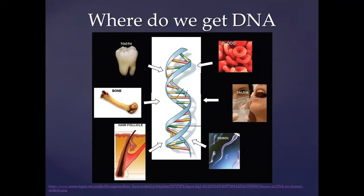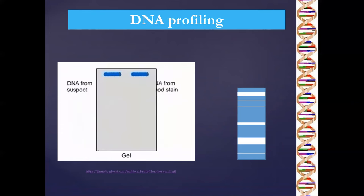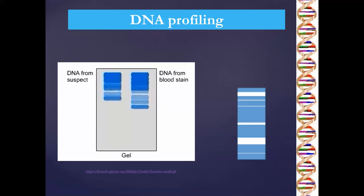Where do scientists get the DNA from? DNA can be found within teeth, bones, and hair that includes the follicle — hair that has been cut would not contain DNA. DNA is also found in body fluids such as blood, saliva, and semen. In the process of DNA profiling, a sample of DNA is placed into a gel plate, electricity is applied, and the portions of DNA separate to produce a unique sequence of bars or bands.